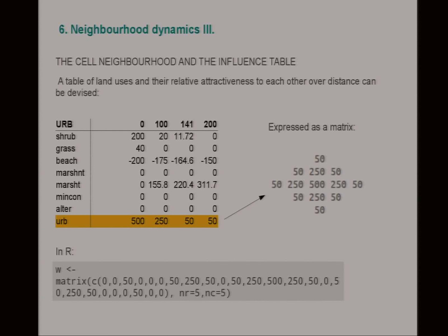Here's the cell neighbourhood and the influence table. We've got our distances from zero to 200 — quite a small neighbourhood — and the attractiveness of urban to other classes. I've highlighted urban in orange, because I'm only going to talk about urban today. This is the attraction of urban to urban. In order that in the second time step you get urban land where urban land was before, it needs to have a high value at zero. If you don't, your urban land gets up and walks across the map, which you don't want. We generate a matrix — that's our cell neighbourhood.